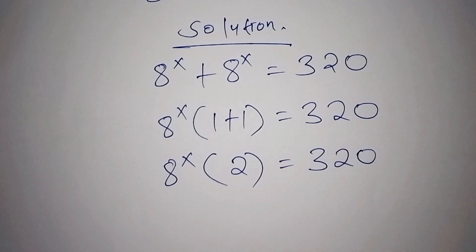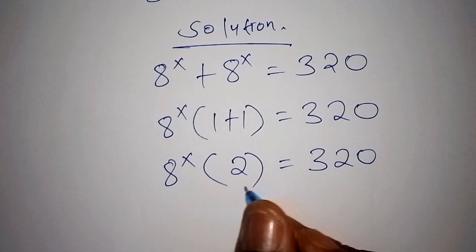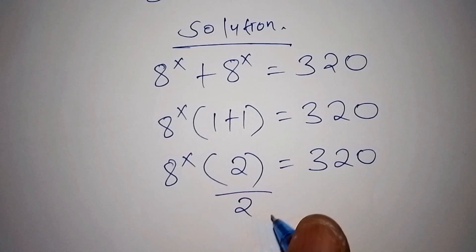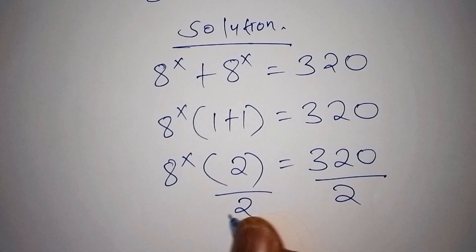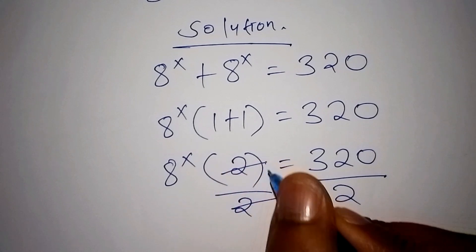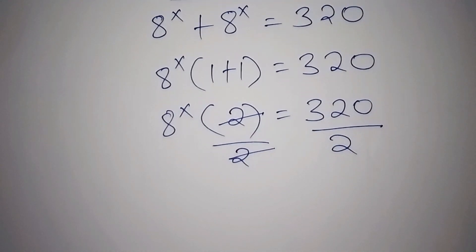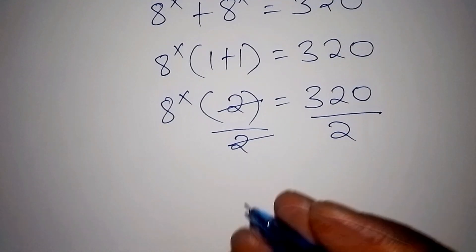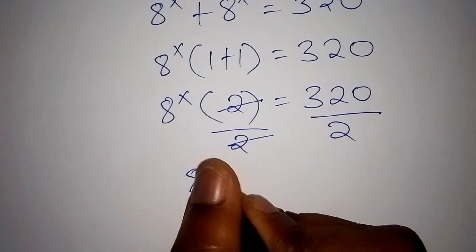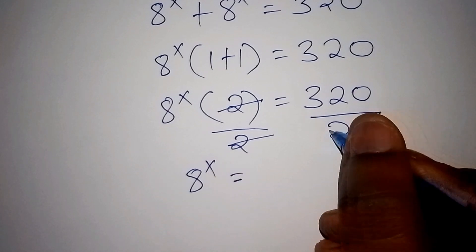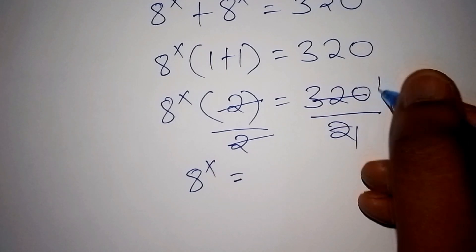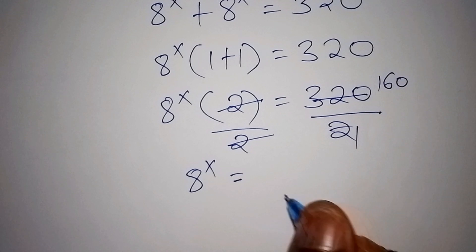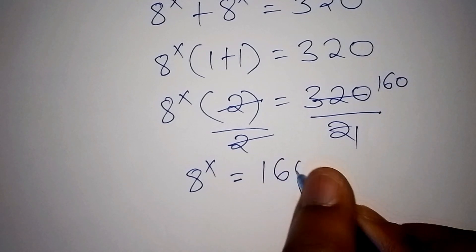We work out the number inside the bracket: 8 to the power of x times 2 equals 320. From there, we divide both sides by 2, so that we remain with 8 to the power of x on one side. So 2 cancels 2, and we remain with 8 to the power of x equals 160.